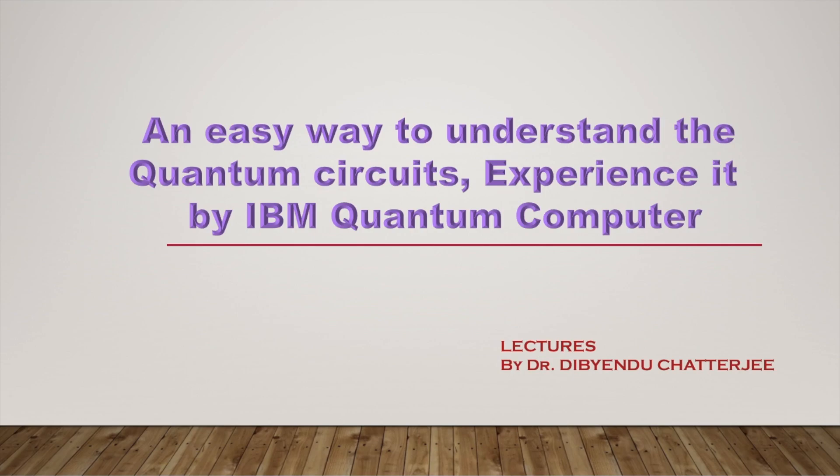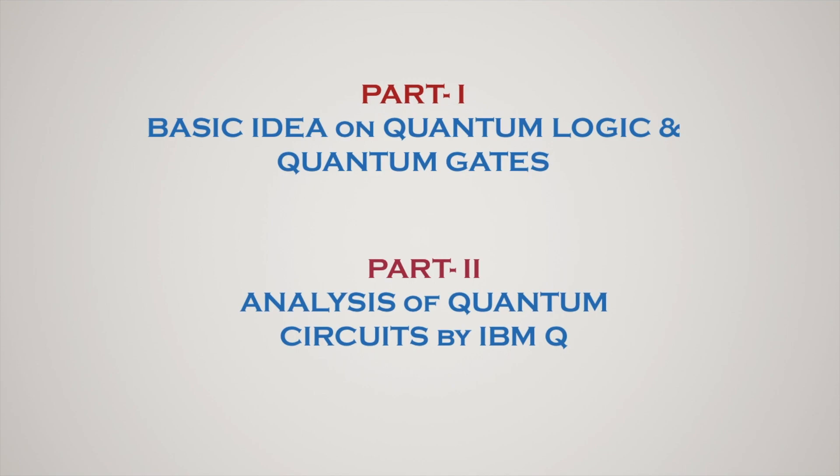This course is divided into two parts. Part one: basic idea on quantum logic and quantum gates. In this part you will get a basic idea on quantum logic, quantum gates, measurement of qubit, and operation of quantum gates. Part two: analysis of quantum circuits by IBM Q. In this part I will analyze some computational problems with the help of quantum circuits.